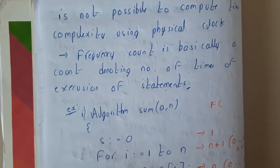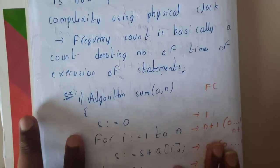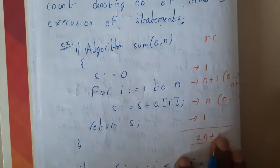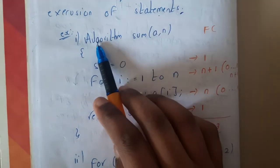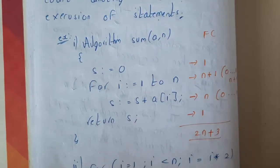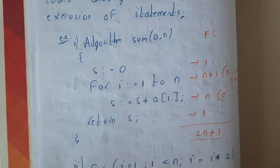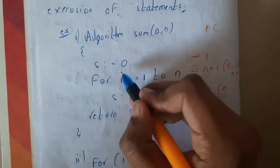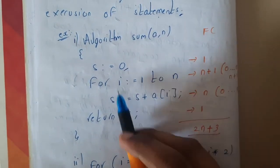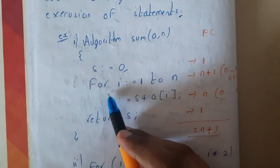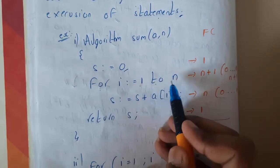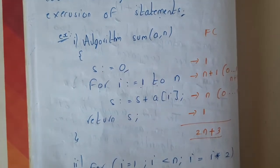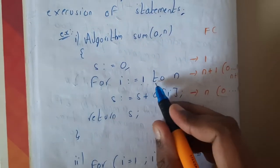Let us go through a small example. We will discuss five to six examples since time complexity is very important. Consider algorithm Sum(a, n) where we are doing addition of some terms. We initially set s = 0, which is one step. Then we have a for loop: for i = 1 to n. Please listen carefully here — this is really important when computing time complexity using your own analysis.